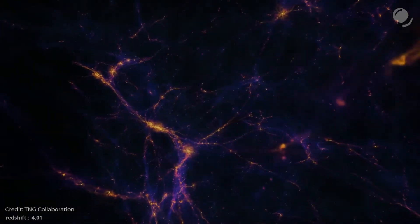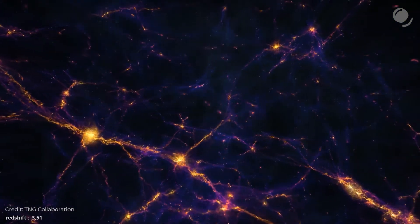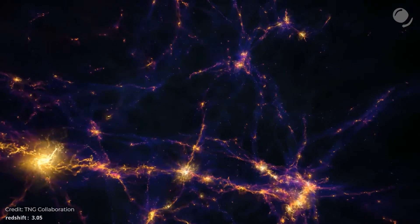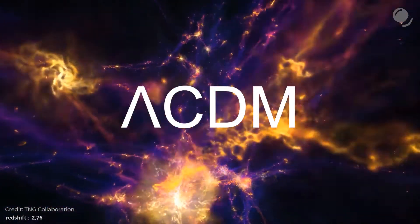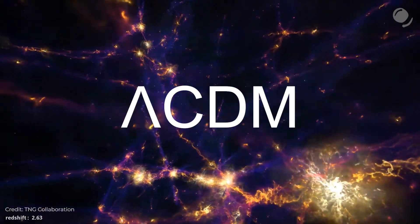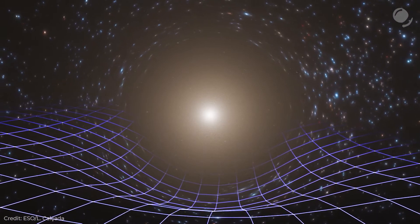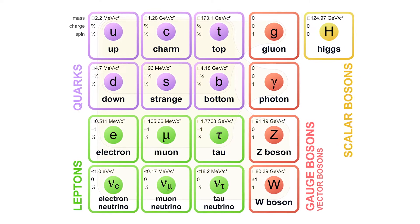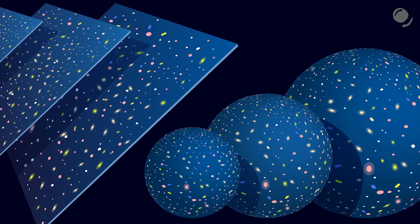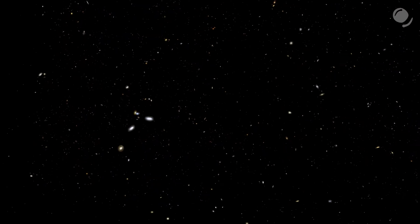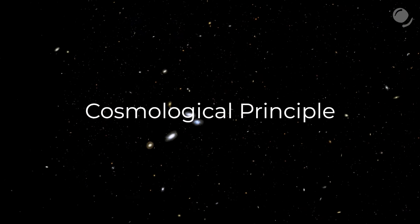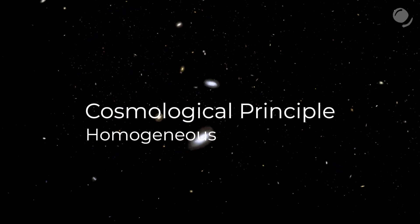Cosmology studies the universe as a whole, its large-scale structure, its formation and evolution. Today the most accepted is the standard cosmological model, or Lambda-CDM model. Some of its aspects are the Big Bang as the beginning of the universe 13.8 billion years ago, the amount of regular and dark matter, as well as dark energy, general relativity on large scales, the standard model of particle physics on the smallest scales, flat geometry of the universe, and so on. All of this is backed by observational data and experiments.